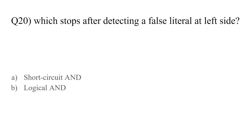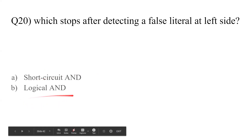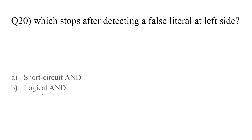Question number twenty: which operator stops evaluating after determining false on the left side? When dealing with logical AND or logical OR, it checks and evaluates both the left-hand side and right-hand side. With short-circuit AND (&&) and short-circuit OR (||), it's different. For OR, if any one operand is true it is considered true. For AND, both must be true. So whenever short-circuit AND detects false on the left-hand side, it does not evaluate the right-hand side.